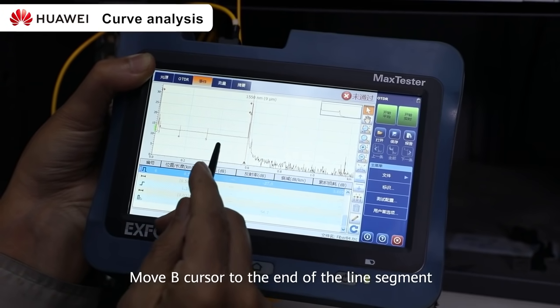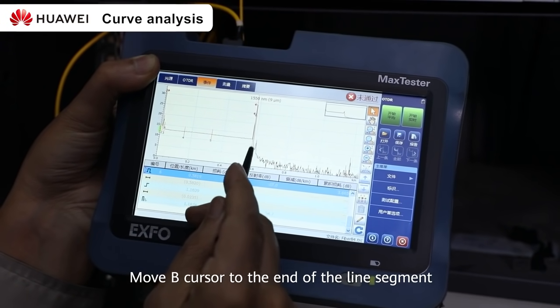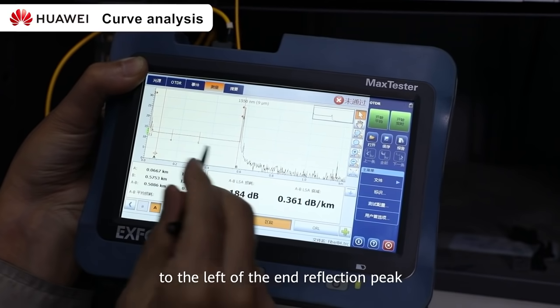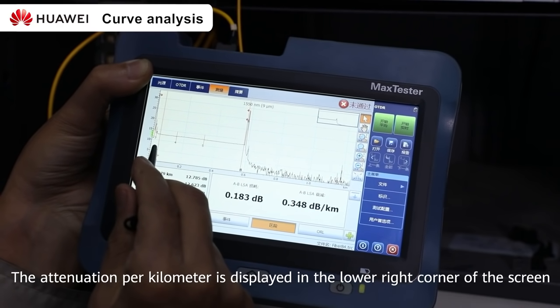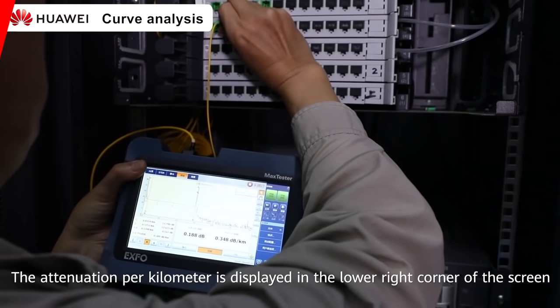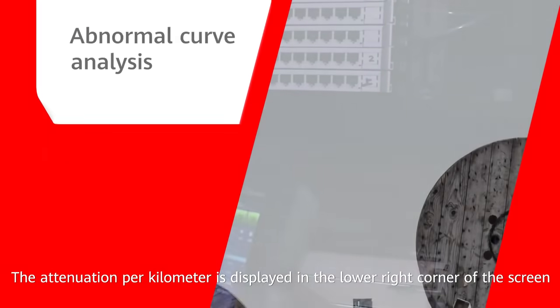Move B cursor to the end of the line segment to the left of the end reflection peak. The attenuation per kilometer is displayed in the lower right corner of the screen.